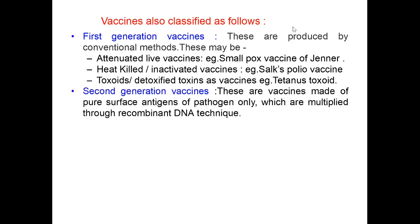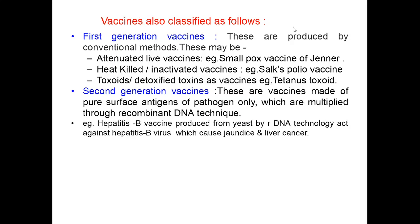Then second generation vaccines: these are vaccines made of pure surface antigens of pathogen only, which are multiplied through recombinant DNA technique. For example, hepatitis B vaccine produced from yeast by recombinant DNA technology, acting against hepatitis B virus which causes jaundice and liver cancer.